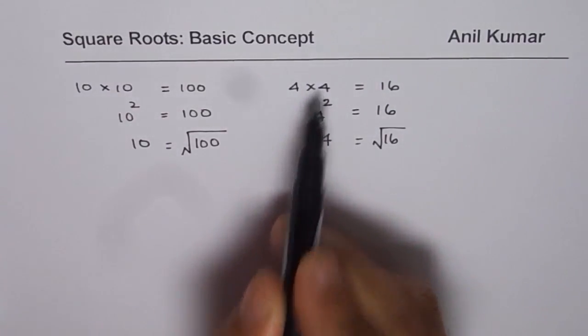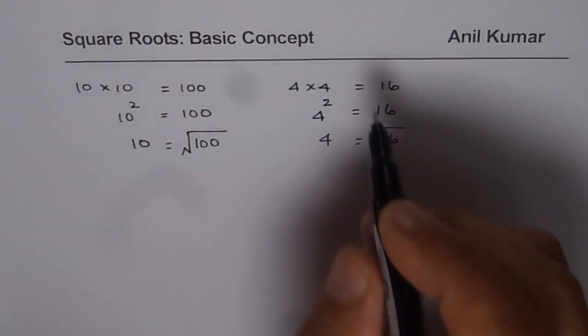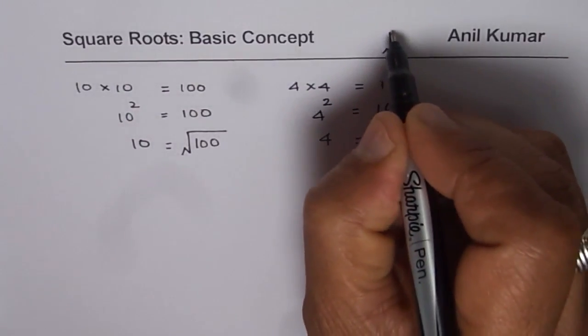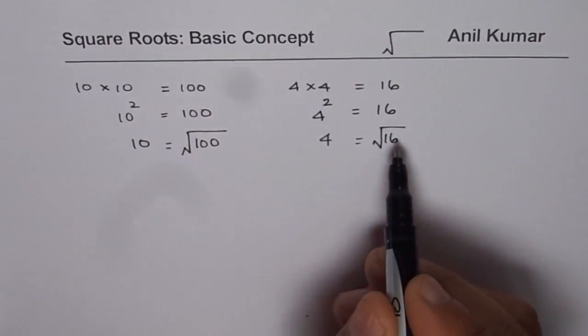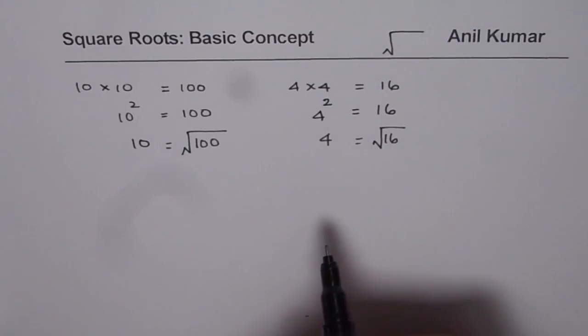One of the common factors. So square root is written as shown here. That is the symbol for square root. Let me write down here. This is the symbol for square root. So square root of a number is one of the two equal factors of that number.